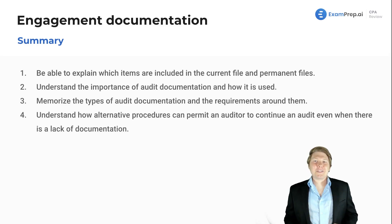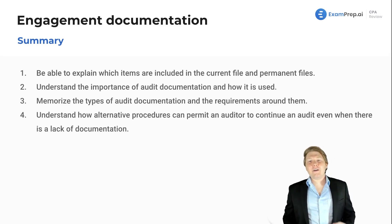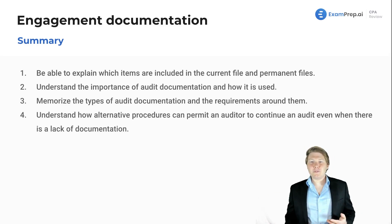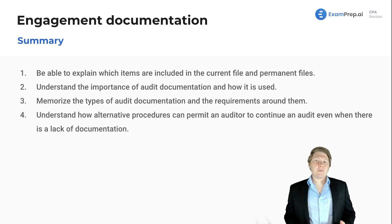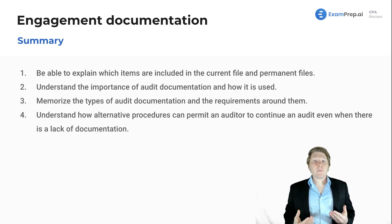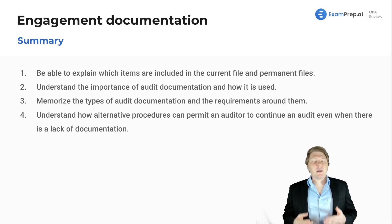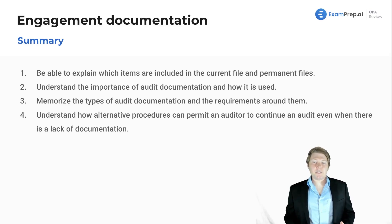So let's wrap it up with a summary. First off, we want to be able to explain which items are included in the current file and the permanent file, and obviously understanding the differences between those two. We also want to understand the importance of audit documentation and how it's used — everything involved with that. We want to memorize the types of audit documentation and the requirements around them, as well as understand how alternative procedures can permit an auditor to continue an audit even when there's a lack of documentation.